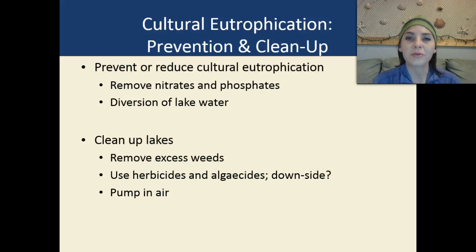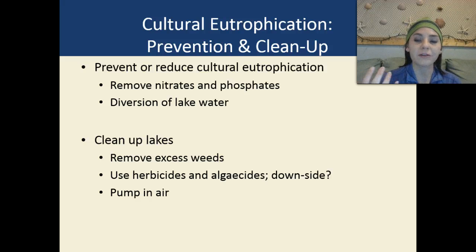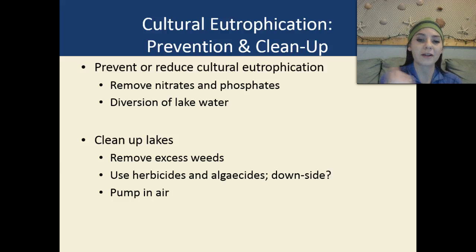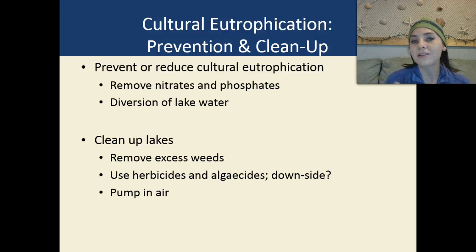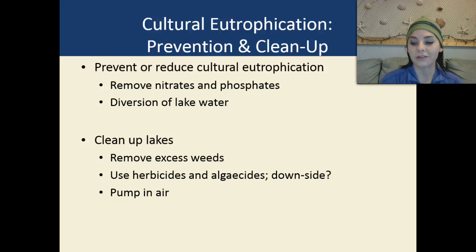So what can we do to prevent cultural eutrophication? We can remove nitrates and phosphates before they enter the water source. We can divert lake water, clean the lakes up, and remove excess weeds using herbicides and algicides — though there's a downside since we're putting more chemicals into the water source. We can also pump in air to try to increase the dissolved oxygen content of the water.